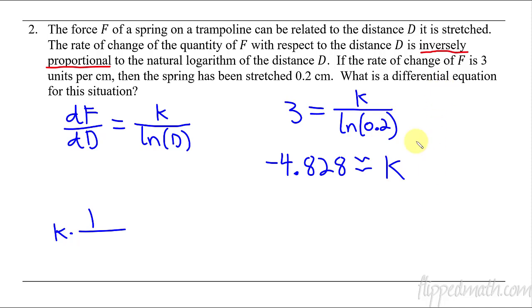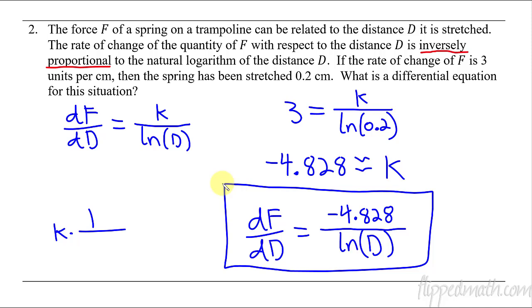So now that we know what k is, we can write a differential equation for this situation. So it's dF/dD with respect to the distance equals, and now I have my fraction, and there's my k of negative 4.828, and that's all over the natural log of the distance D. So there is our differential equation that matches this situation. But in this one, we actually had to figure out what that constant was, the constant of proportionality. So sometimes you'll have that to figure out.